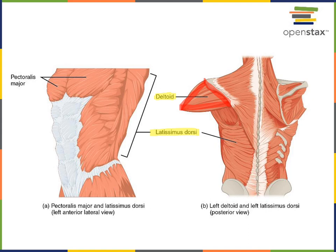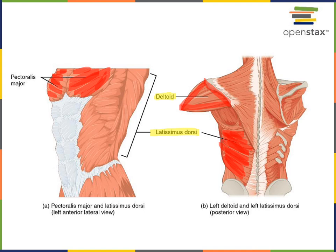Coming around to the anterior view, in the mammary region we can see pectoralis major. Pectoralis major is another muscle that contributes to adduction of the shoulder joint. While the deltoid abducts — lifting the arm at the shoulder joint — pectoralis major and latissimus dorsi adduct, lowering the arm at the shoulder. This movement occurs through the coronal or frontal plane, in contrast with flexion and extension which move through the sagittal plane.